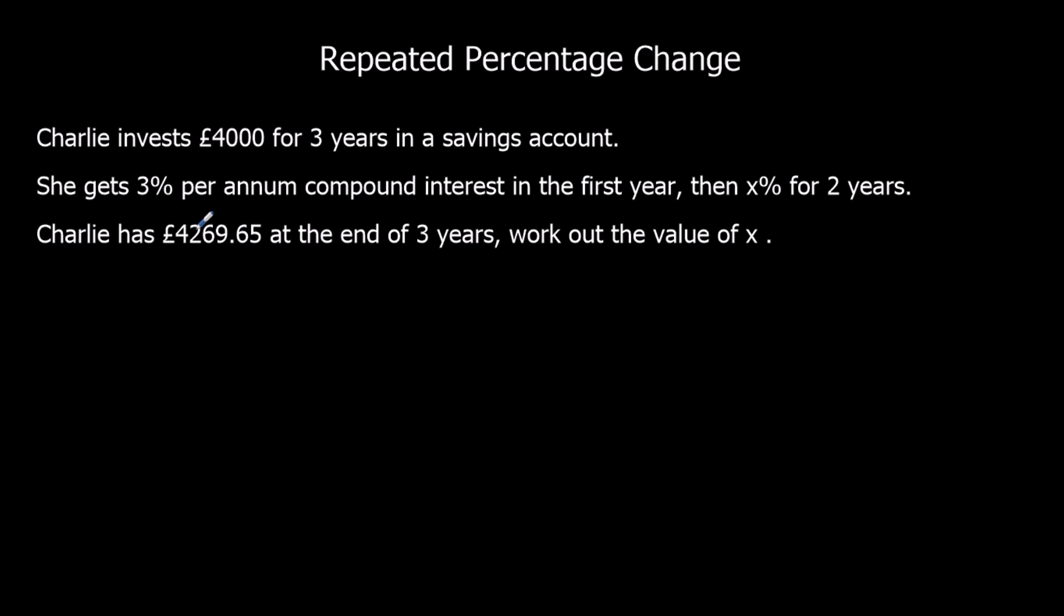So we've got our original amount which was 4,000. We've got three percent in the first year, so that's a multiplier of 1.03. And then we don't know the percentage for the next two years, so we'll just call the multiplier Y. And it's twice for two years. And then that equals 4,269.65. So we're going to find out what Y is, so we're going to divide by 4,000 and divide by 1.03.